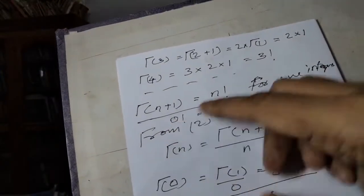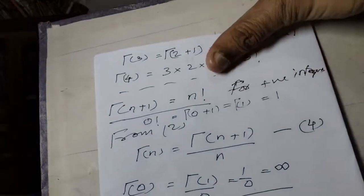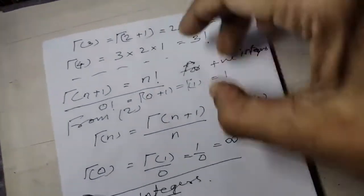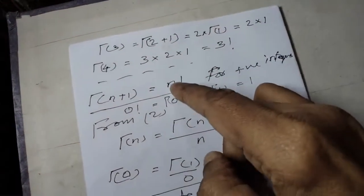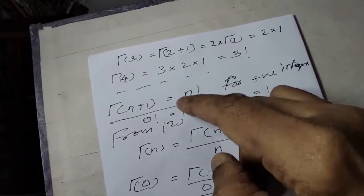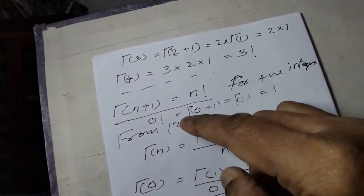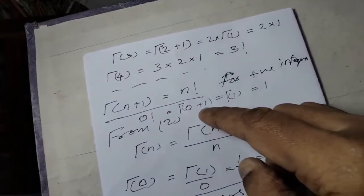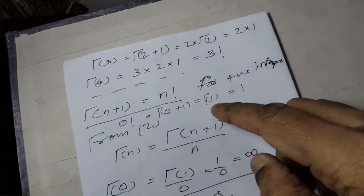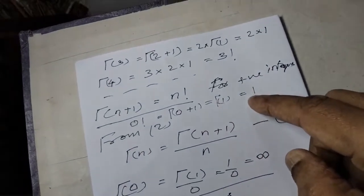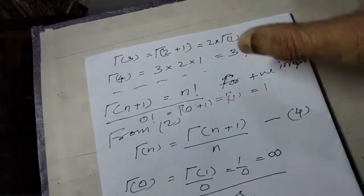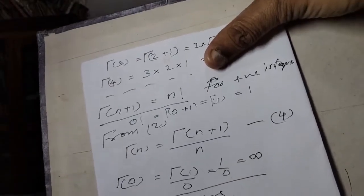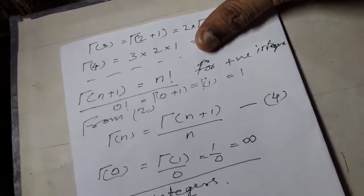For 0 factorial: using the recursion, gamma(0+1) = gamma(1) = 1. Therefore 0 factorial equals gamma(1) = 1.